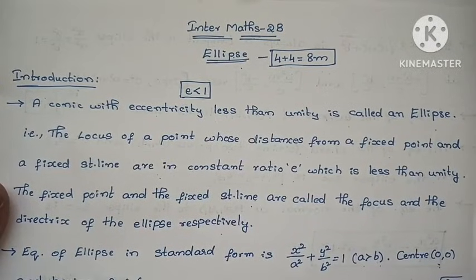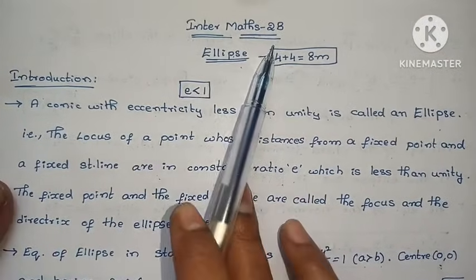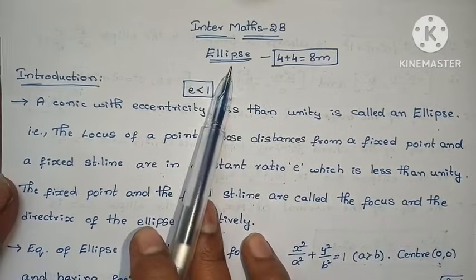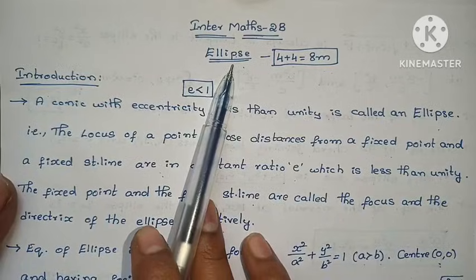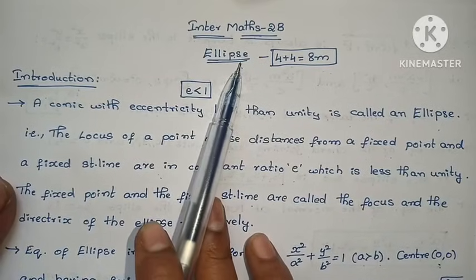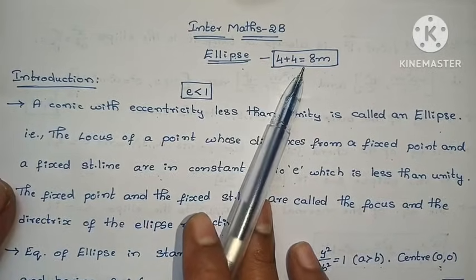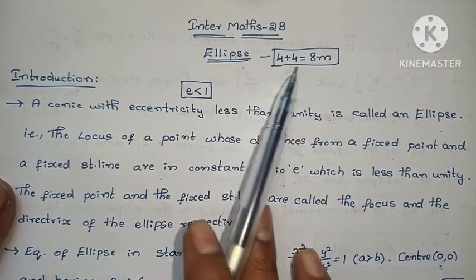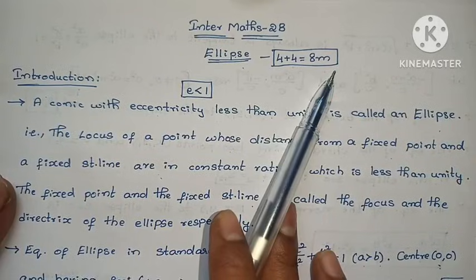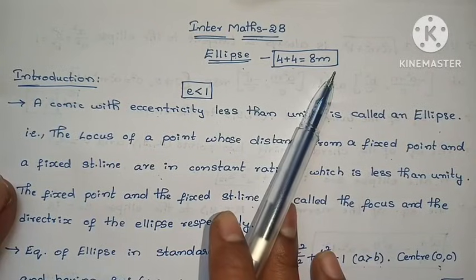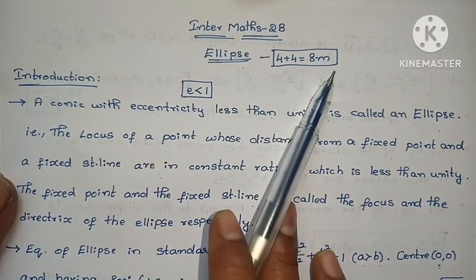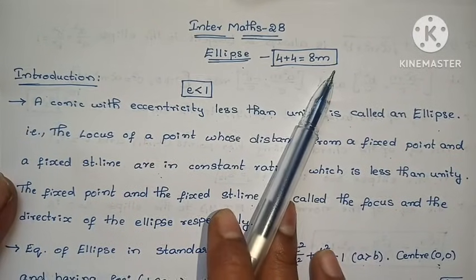Hi, welcome to Paranika Marks. This is my maths tutorial. I am going to start a little chapter. You have 4-mark problems, so this is the total value of 8 marks. This is easy to score 8 marks.